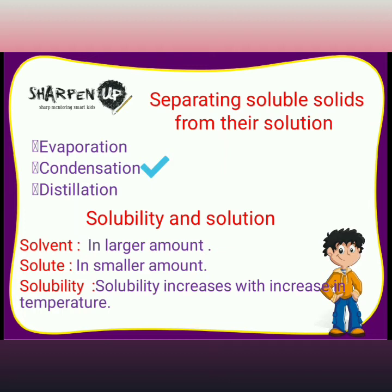Next is condensation: the process of changing vapor into liquid on cooling. We can get water from a salt solution by this process. And the last is distillation: it is a process of obtaining both the dissolved soluble substance and the liquid in which it is dissolved. The mixture is heated in a flask; the solid component is left behind in the flask and the liquid is collected in another flask with the help of a condenser.